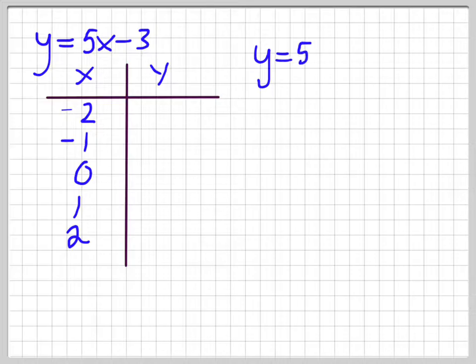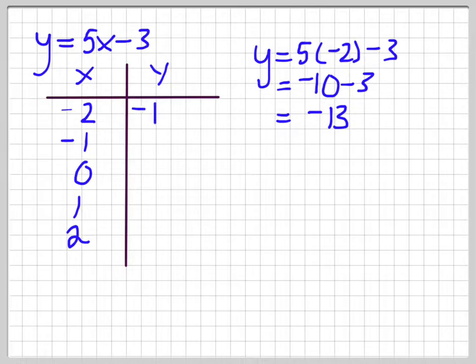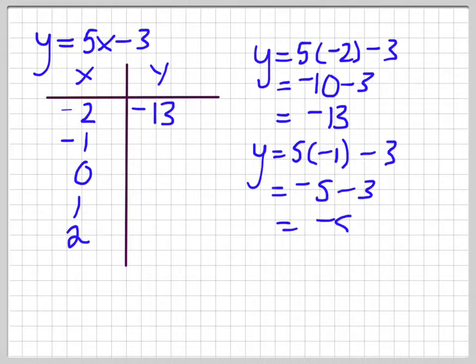So y is equal to 5 times negative 2 minus 3. So that's negative 10 subtract 3, and that's negative 13. Let's try the next one. So y is equal to 5 times negative 1 minus 3. So that's negative 5 minus 3, negative 8.